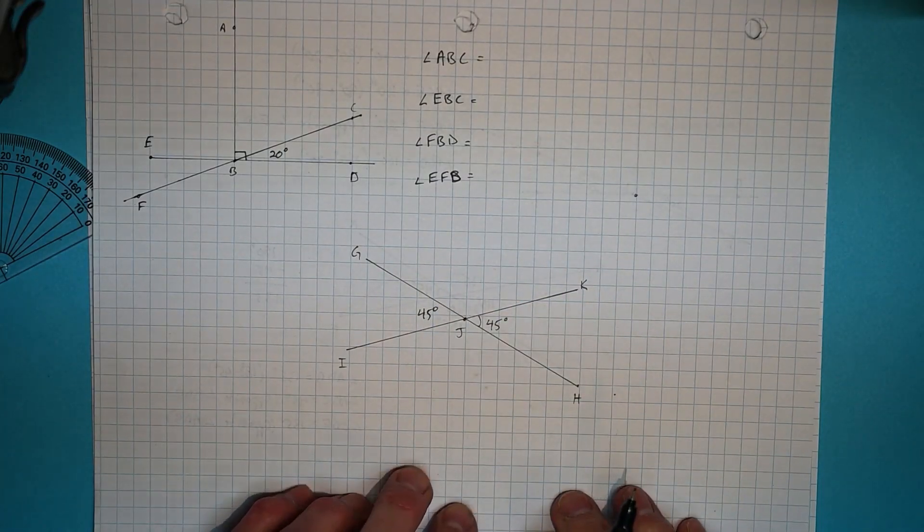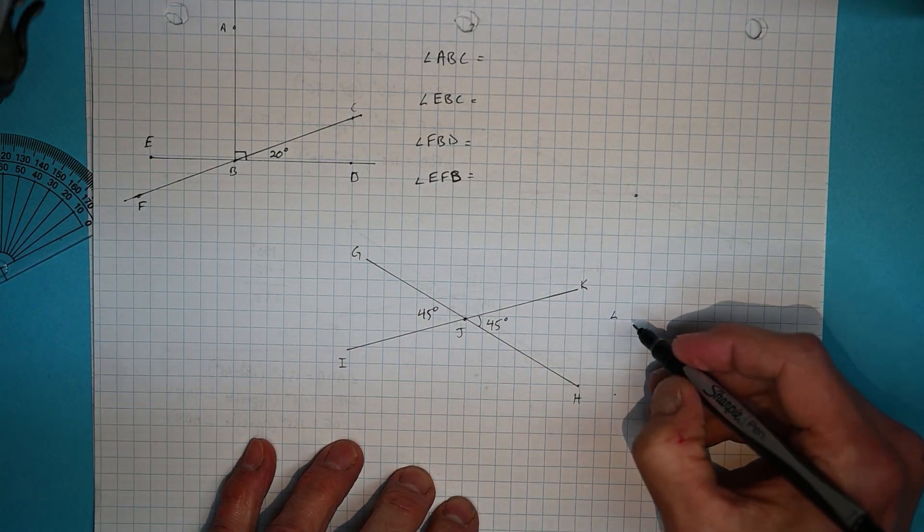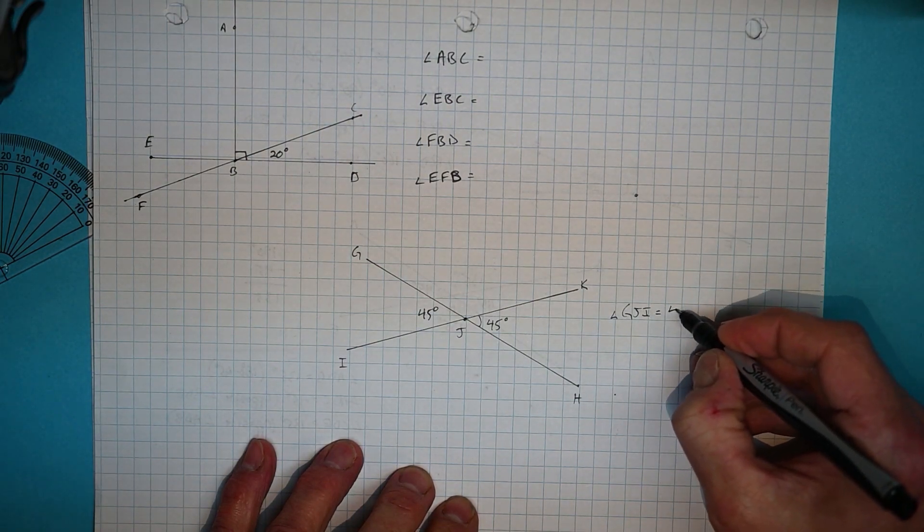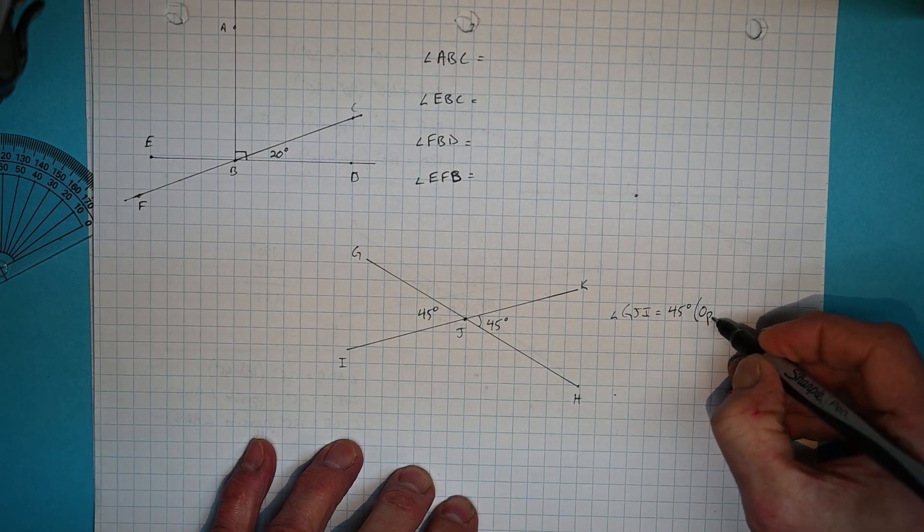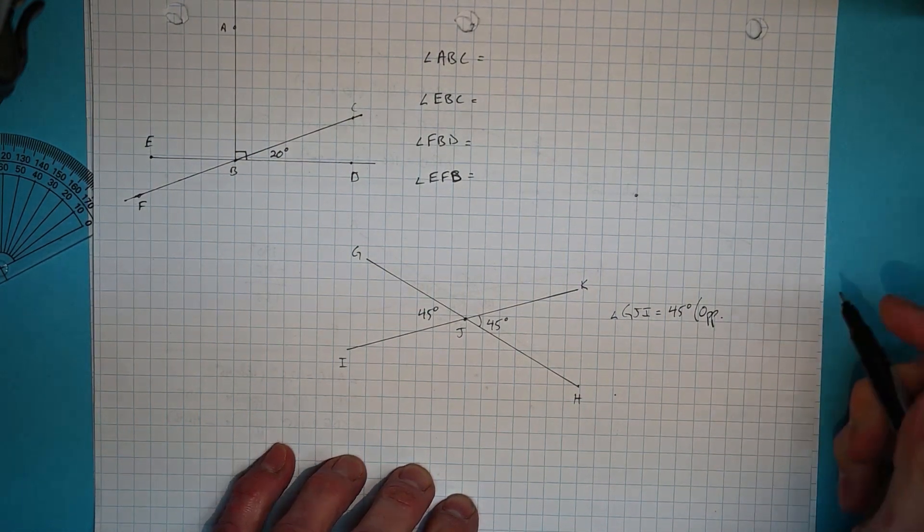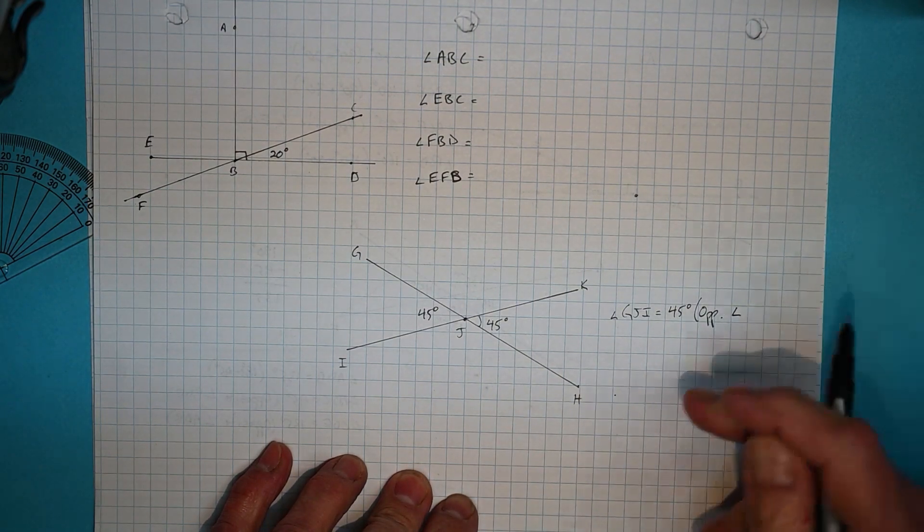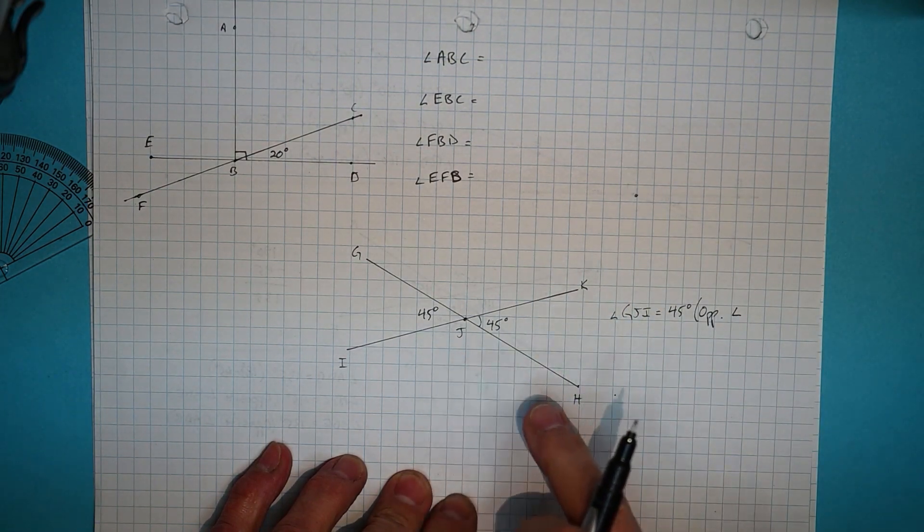In terms of showing our thinking, we would say then that angle GJI is 45 degrees because it is opposite. And we're going to use short forms again, just so the writing doesn't get too tedious. It is opposite to angle KJH.